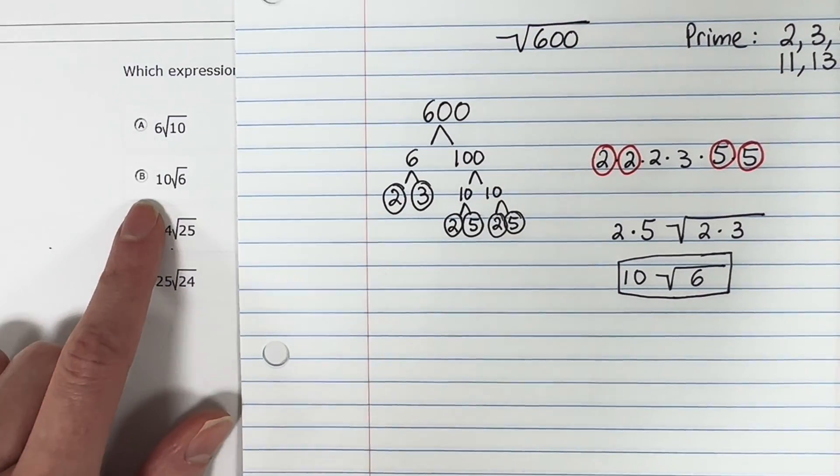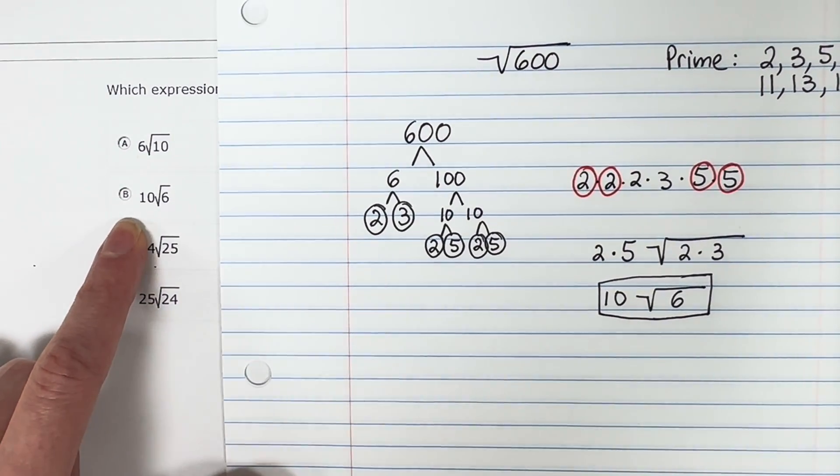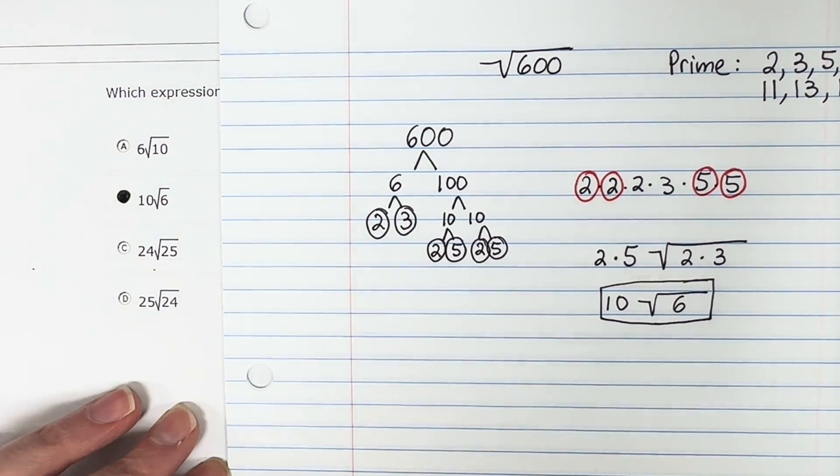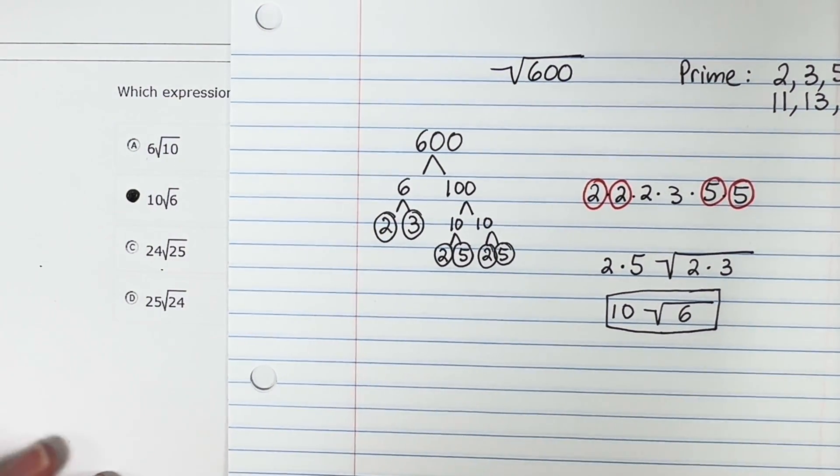Let's go ahead and see which answers are available. It looks like B is the answer. 10 times the square root of 6. Let me go ahead and show you that shortcut now.